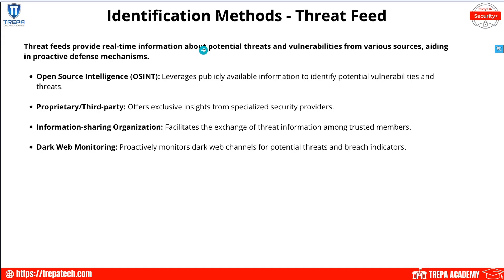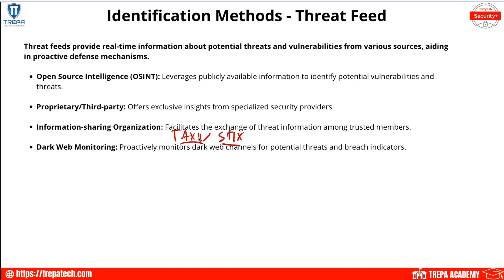Threat feeds deliver real-time information about the current cybersecurity landscape and known vulnerabilities. OSINT feeds leverage publicly available information to identify potential vulnerabilities and threats. Proprietary or third-party feeds offer exclusive insights from specialized security providers — essentially a subscription service. Information sharing organizations facilitate the exchange of threat information among trusted members — one example being the TAXII and STIX client-server architecture. You can also do dark web monitoring, for example after a security breach where data may have been stolen and is possibly being sold on the dark web.